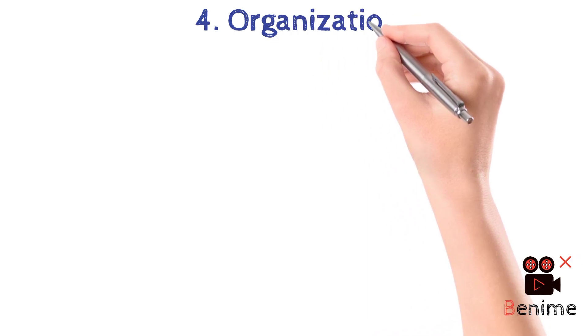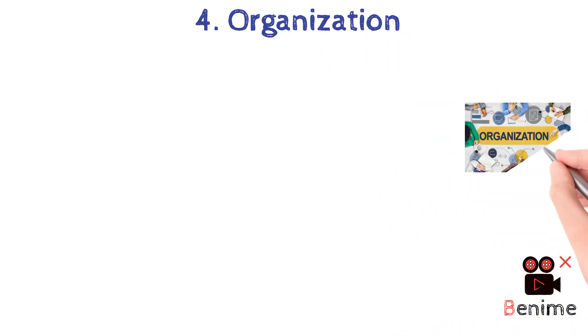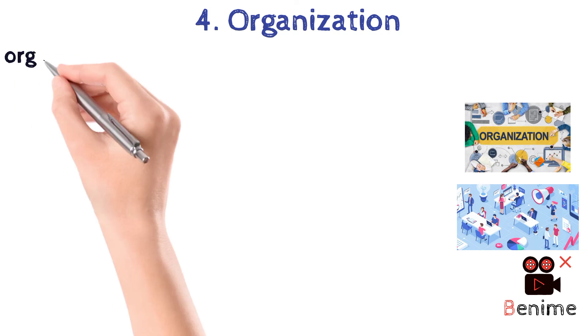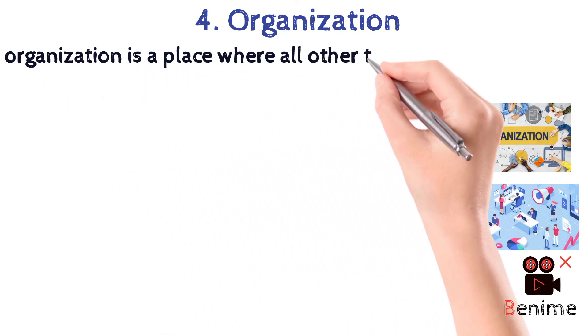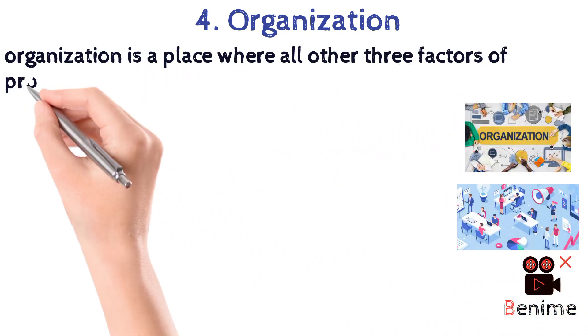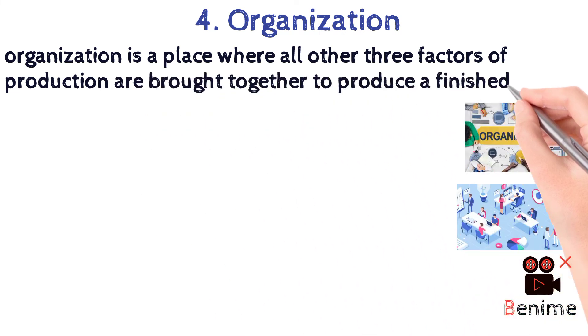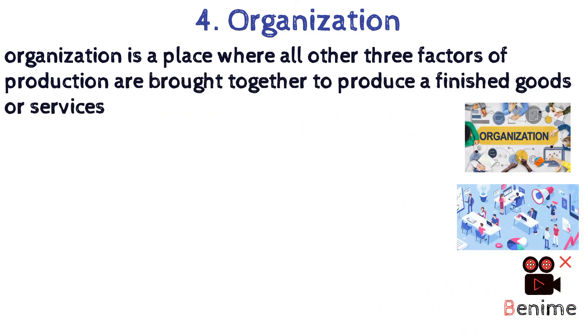Now our last factor of production is organization or entrepreneurship. In simple words, organization is a place where all other three factors of production are brought together to produce finished goods or services. Now let us see some of the major features of organization.